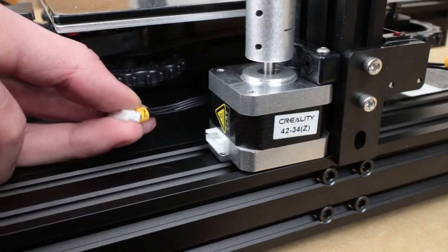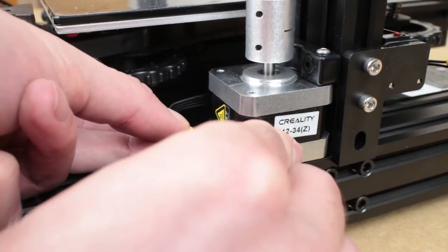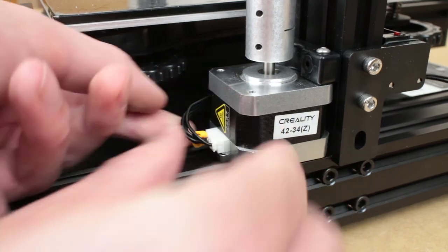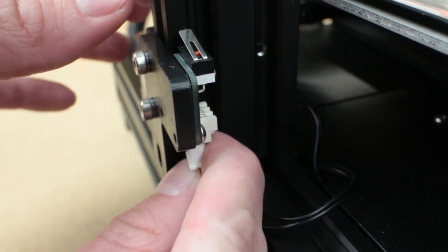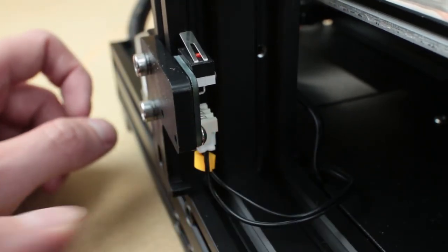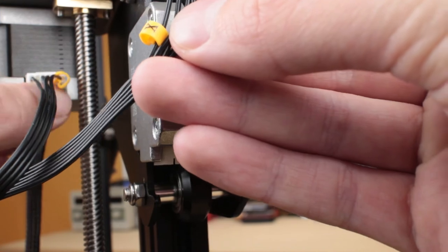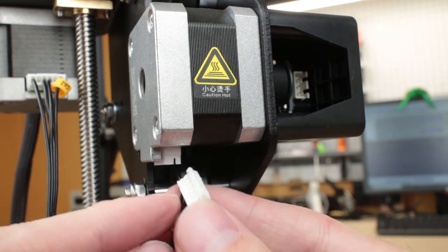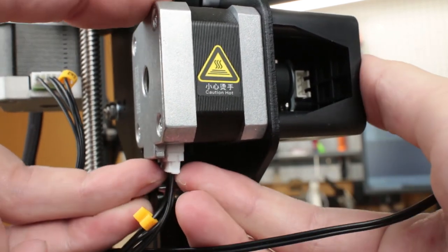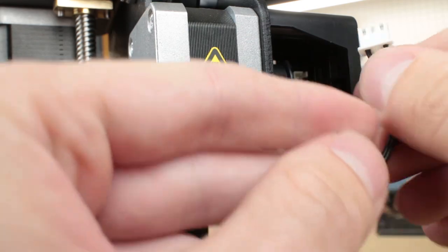The wiring is pretty easy. We're just going to plug the Z-plug into the Z-axis motor. The Z-limit switch. The E-plug goes into the extruder motor. The X-plug goes into the X-axis motor. The X-limit switch. Tucks in here.